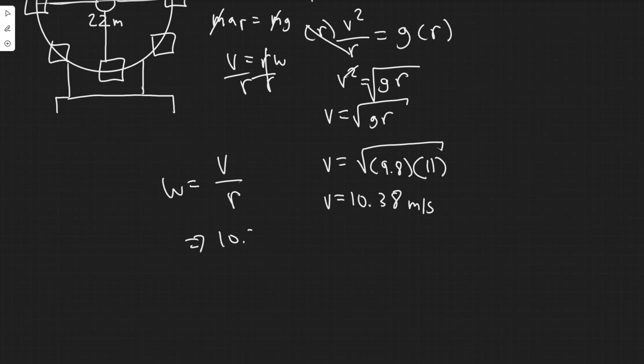So once again, the velocity is 10.38. And then you're divided by the radius, which is 11. So I'm going to use the exact value of my calculator here. You will get 0.9439. And then this is going to be radians per second.